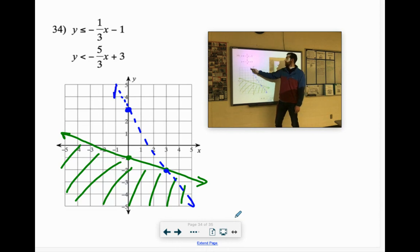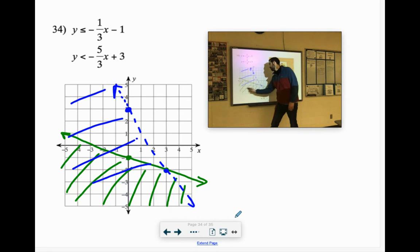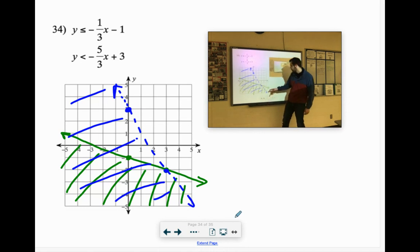And it's less than, so that would be everything under this line. Oh, and we're using the blue marker. What? So they overlap each other. Let's see right down here.